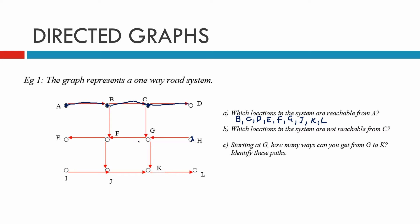Part B asks which locations are not reachable from C. Starting at C, we can't get to A at all. We can go down to G and across to F, but we can't get to B — so A and B are out. We also can't get to H and I because nothing goes into those two. Then part C asks: starting at G, how many ways can you get from G to K? Identify these paths.